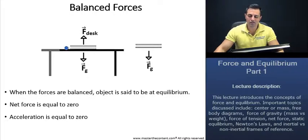This book sitting on the desk has two forces acting on it. It has the force of gravity downwards and the force from the desk upwards. Because these two forces are equal in magnitude, we know that we're working with balanced forces. Let's look at our bullets now. When the forces are balanced, the object is said to be at equilibrium. The net force is equal to zero. Again, the two forces are equal in magnitude, and acceleration is zero when you're working with balanced forces.